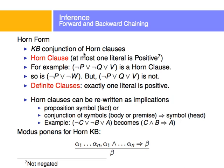A knowledge base is a conjunction of clauses. So far, we've put them in conjunctive normal form, but we're going to specify this definition to say they have to be a set of horn clauses. A horn clause is a clause where at most one literal is positive.